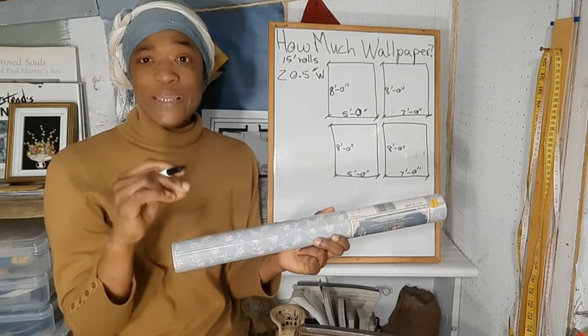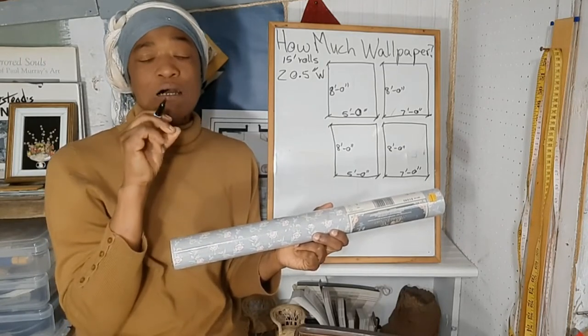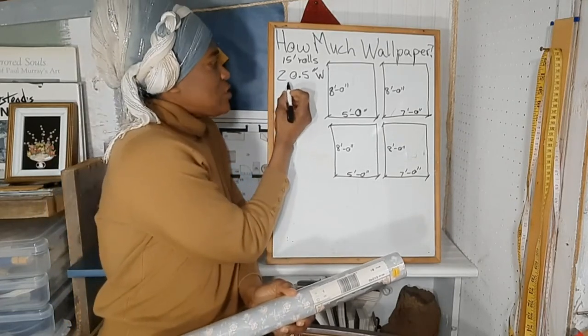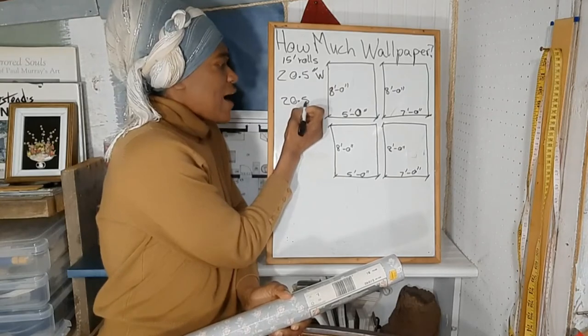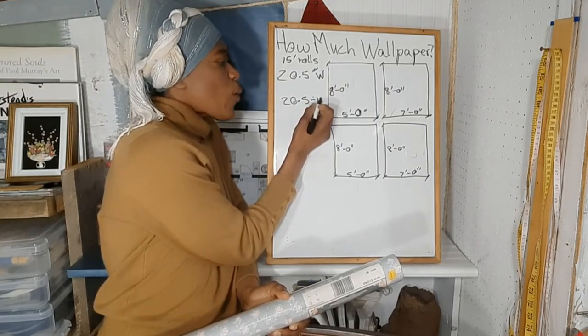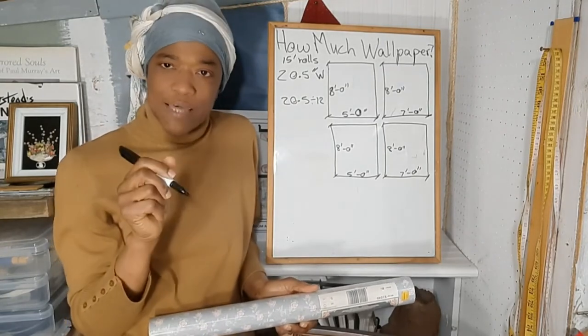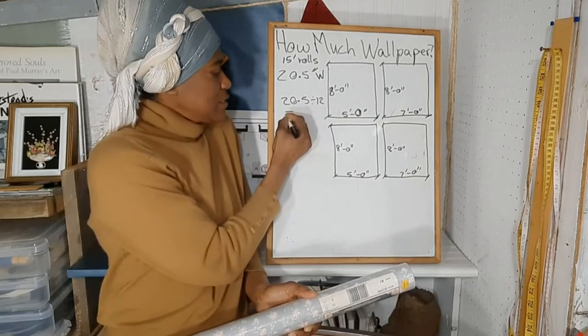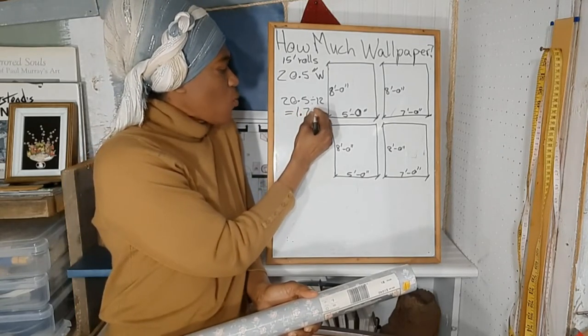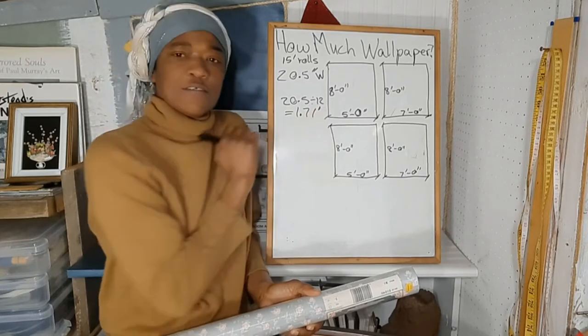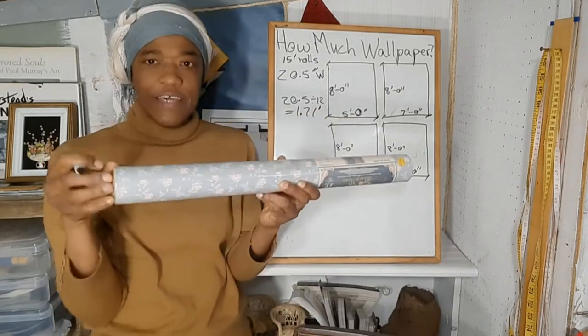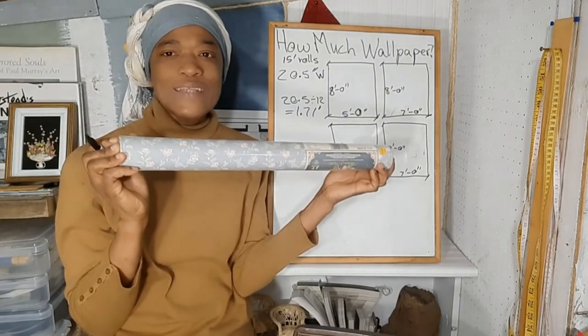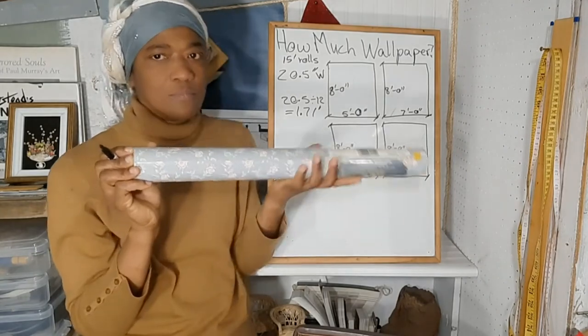So we'll divide 20.5 by 12 inches, and we do that because there are 12 inches in a foot, and we get 1.71 feet. So now we know that this wallpaper—the width in feet—is 1.71.